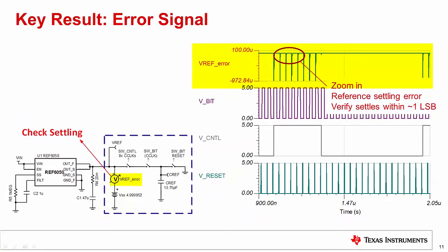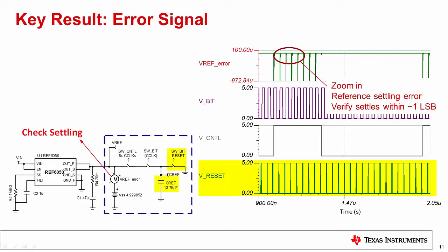The most important signal monitored in this type of simulation is the error signal, noted Vref error. This signal compares the voltage at the reference input pin to a steady state voltage source, noted VSS. The DC voltage on VSS is set equal to the normal DC output of the reference when it is fully settled. The goal is to get a zero Vref error signal when the voltage of the SAR reference input equals the steady state reference output. For proper reference input settling, we look at the Vref error within each conversion clock cycle. Also notice that the CREF load capacitor is reset at the end of each conversion clock cycle.